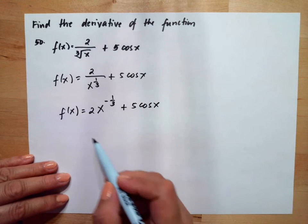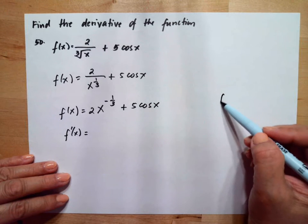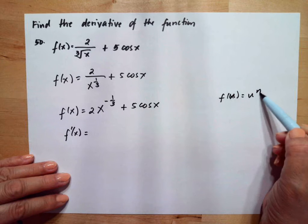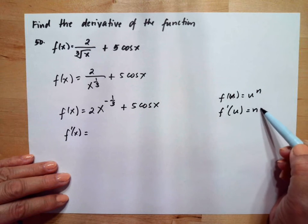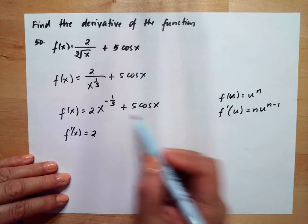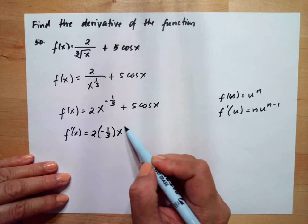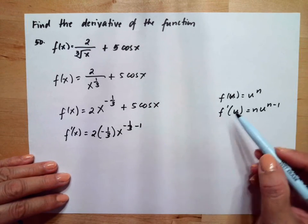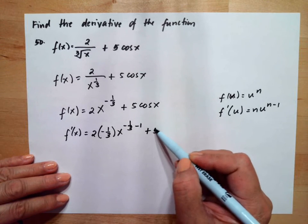The derivative of f(x): using the power rule, the derivative of u to the n is n times u to the n minus 1. So we get 2 times negative one-third times x to the negative one-third minus 1, then the derivative of cosine is negative sine x.